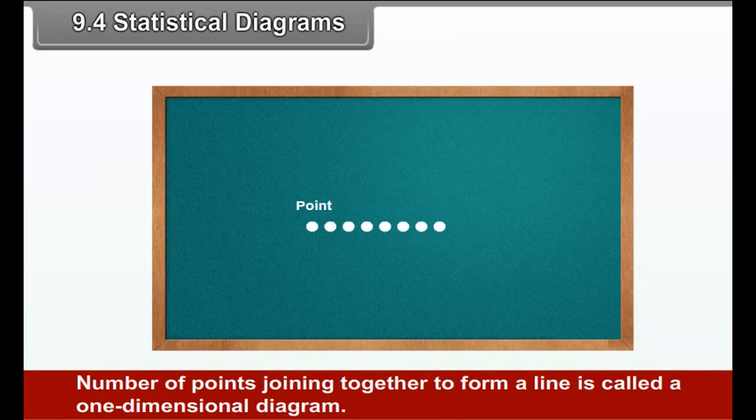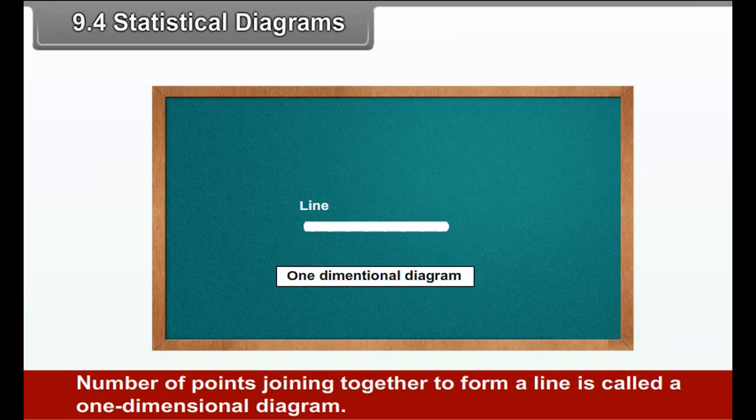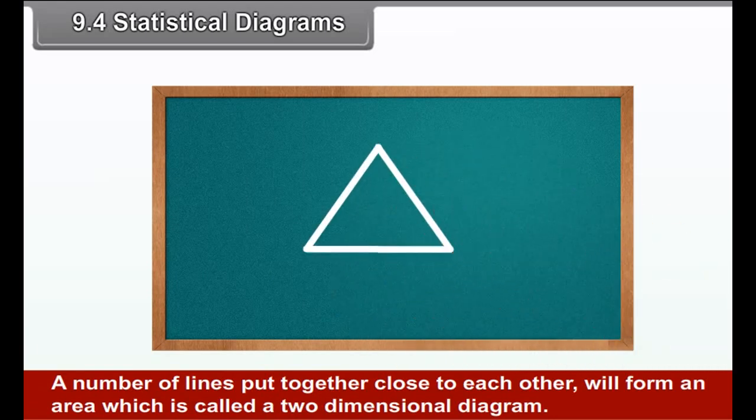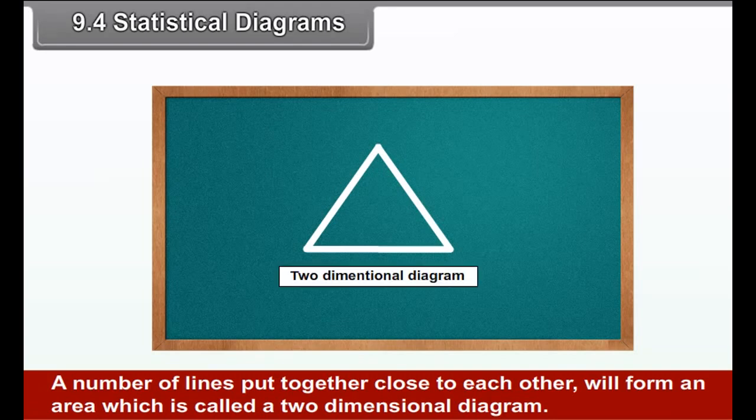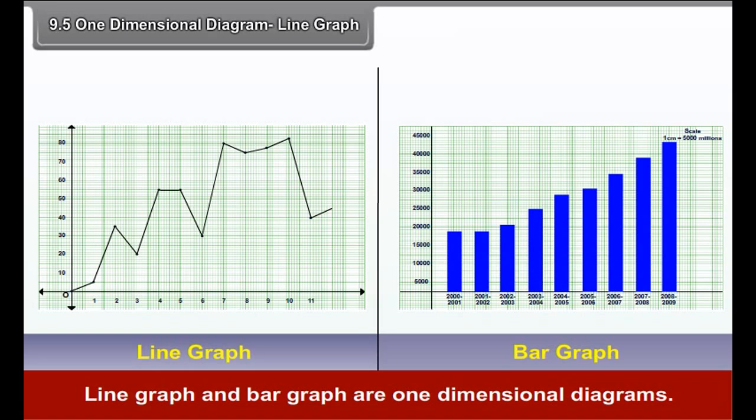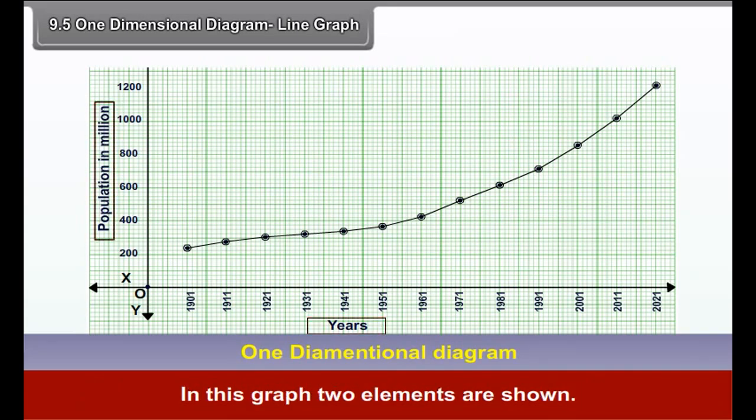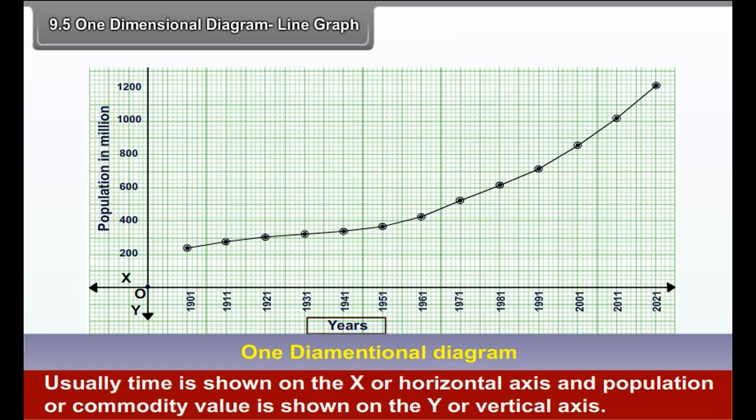9.4 Statistical diagrams. Statistical diagrams represent statistical data. Everything that exists has some dimension. Things can have 1, 2, 3 or more dimensions. Length, area and volume of an object are measured with 1, 2 and 3 dimensions. A point is supposed to be a non-dimensional entity. Number of points joining together to form a line is called a one-dimensional diagram. A number of lines put together close to each other will form an area which is called a two-dimensional diagram.